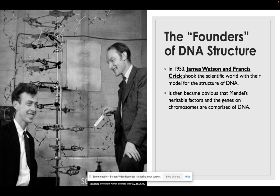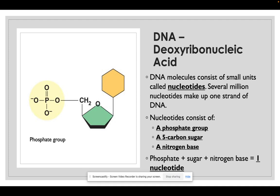So founders, which is pretty loose, of the DNA structure were James Watson and Francis Crick in 1953. It became obvious that Mendel's traits and hereditary factors, the genes and chromosomes, were composed of DNA. So DNA, deoxyribonucleic acid, consists of small units called nucleotides. Several million nucleotides make up one strand of DNA and they consist of a phosphate group, a five-carbon sugar, and a nitrogen base. So again, a phosphate, a sugar, a nitrogen base equal one nucleotide.